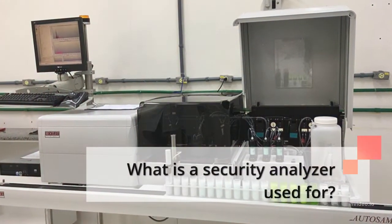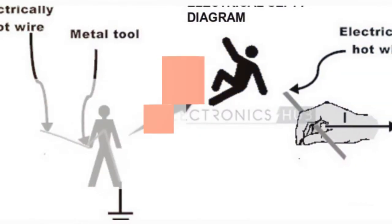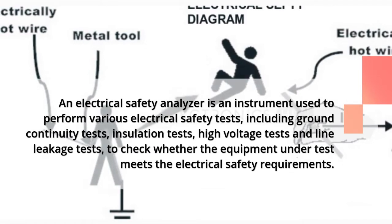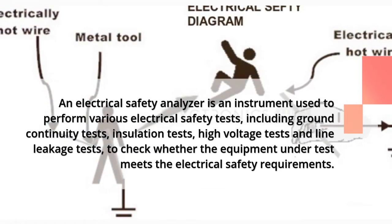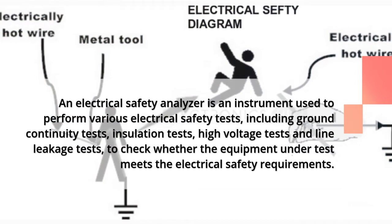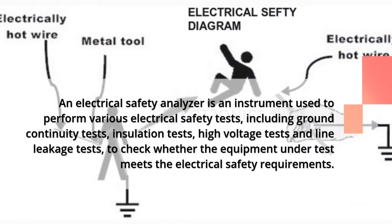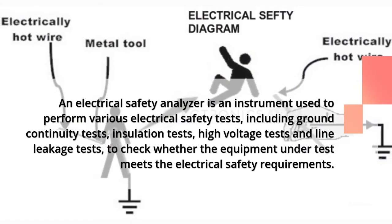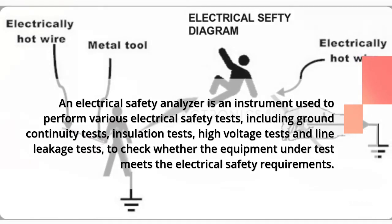What is a safety analyzer used for? An electrical safety analyzer is an instrument used to perform various electrical safety tests, including ground continuity tests, insulation tests, high voltage tests, and line leakage tests, to check whether the equipment under test meets the electrical safety requirements.